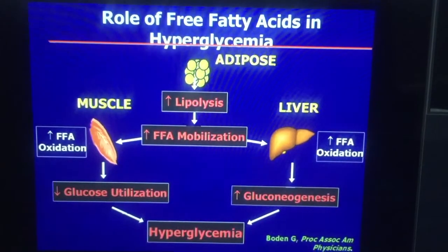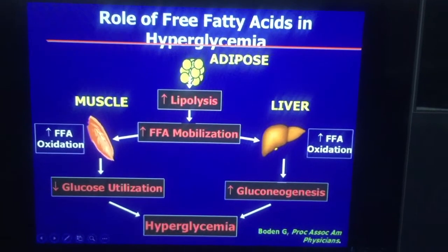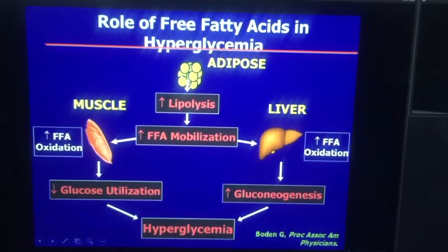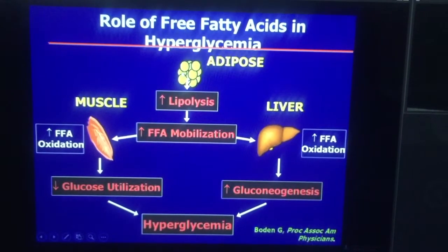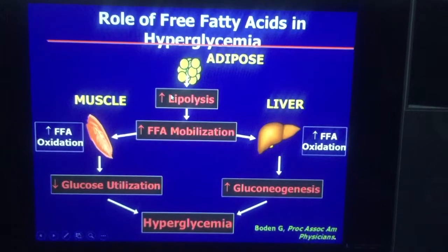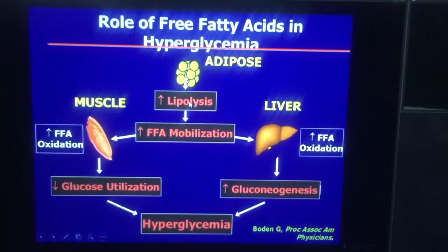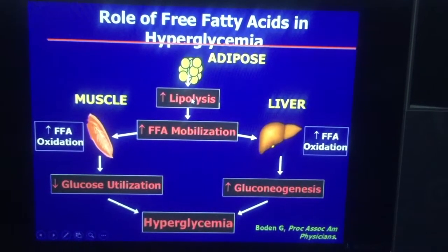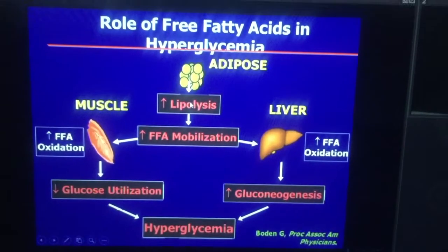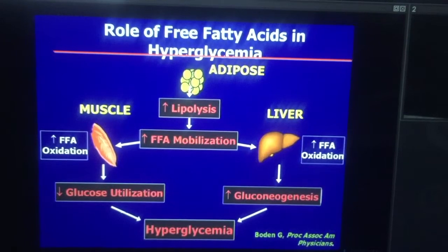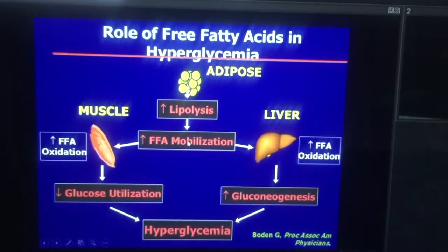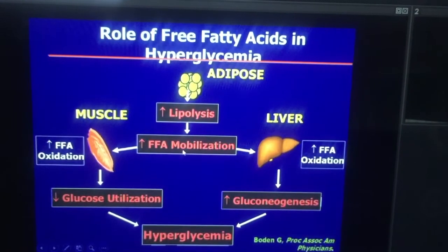With regard to adipose tissue, because adipose tissue is also resistant to insulin, even though the insulin level goes up, there is increased lipolysis. In other words, the adipose tissue can't inhibit release of fatty acids from the adipose, so you have increased fatty acid mobilization and increased levels of fatty acids circulating.